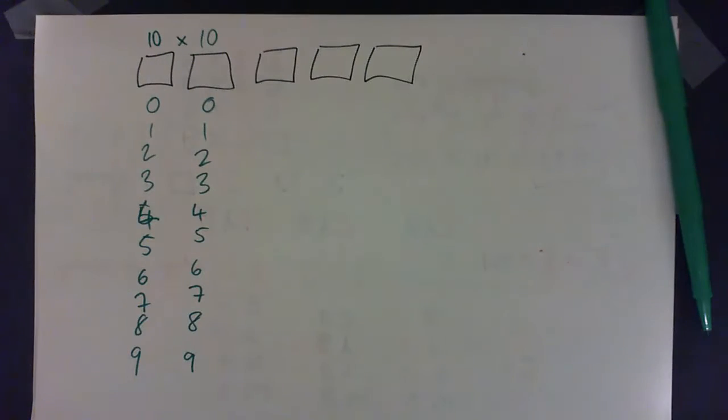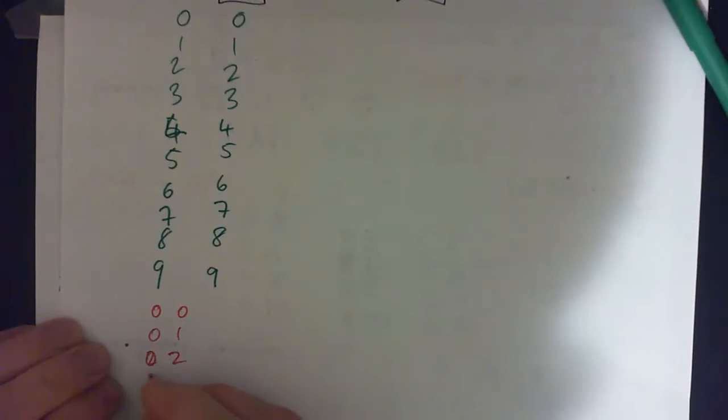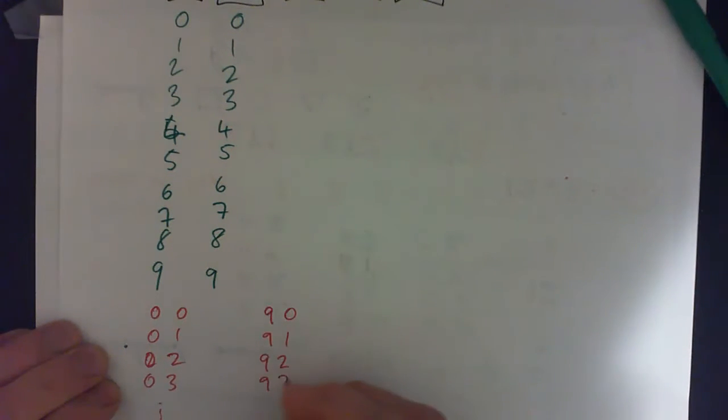We've gone over many times about how you can make a two-digit possibility, such as zero zero, zero one, zero two, zero three, and so on, all the way up to nine with a zero, nine with a one, nine with a two, nine with a three, and so on.